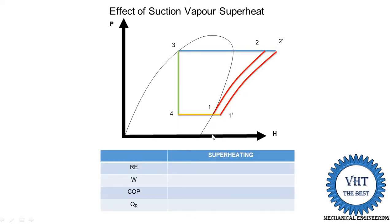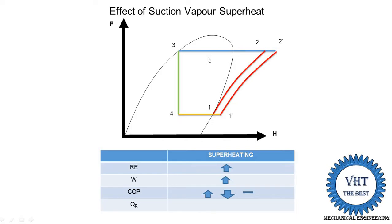Writing the changes due to suction superheat: the refrigerating effect is increased because in the earlier case it is H1 minus H4, and now the line is extended, increasing the refrigerating effect. Work done is also increased because the vapor enters the superheated region where specific volume is increased, requiring a higher mass flow rate. For COP — COP equals refrigerating effect divided by work done — since both refrigerating effect and work done are increased, COP may increase, decrease, or remain equal, depending on the pressure range of the refrigerant.